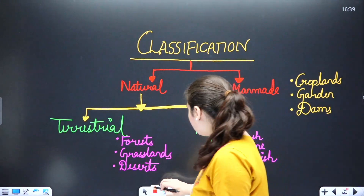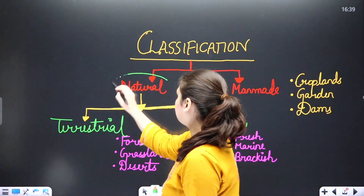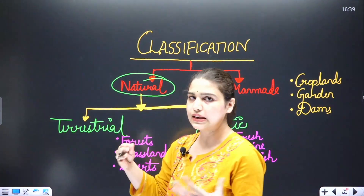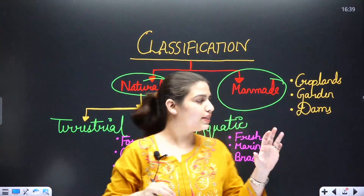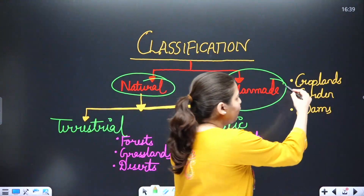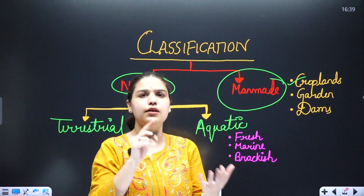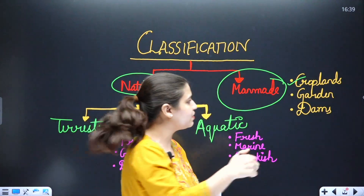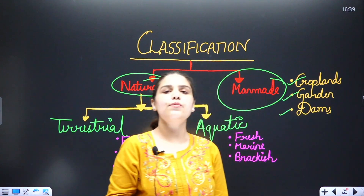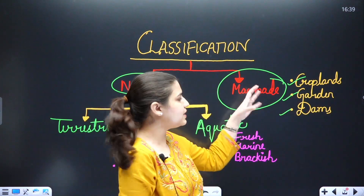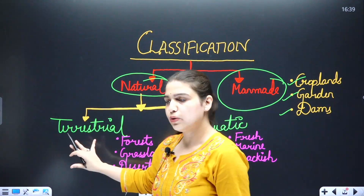Now let's look at the classification of ecosystems. We classify ecosystems into two parts: natural, which occurs in nature, and manmade. Under manmade ecosystems we have croplands, agricultural fields of rice, wheat and different crops, gardens, dams, and reservoirs.